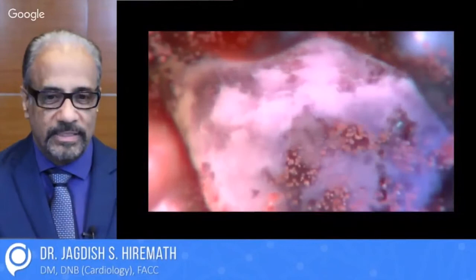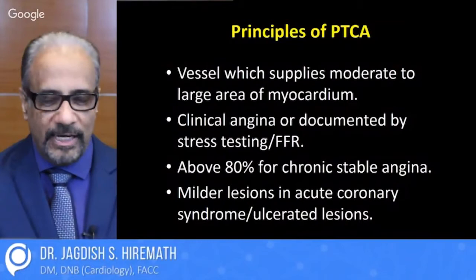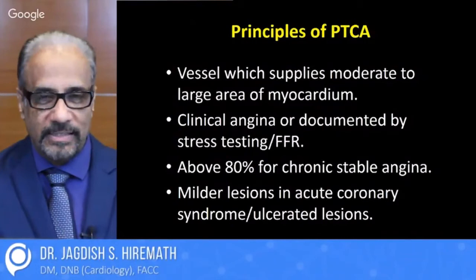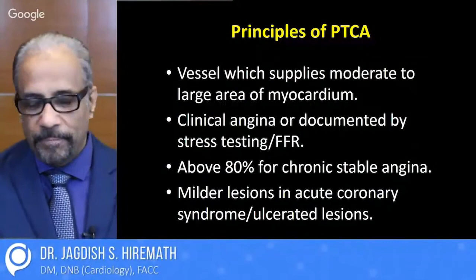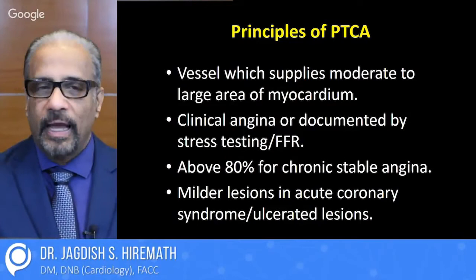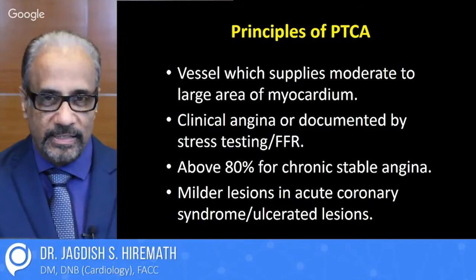In general, the principle is that the vessel supplies a moderate to large area of myocardium. The person should have clinical angina or it should be documented by a stress test — a thallium stress, a stress echo, or fractional flow reserve (FFR), which is an invasive way of looking at coronary ischemia. About 80% lesion is the threshold in chronic stable angina for stenting, while milder lesions are stented in acute coronary syndrome, especially if ulcerated or having caused an event. It's nature's indication to be aggressive and stent lesions which have caused acute coronary syndrome.